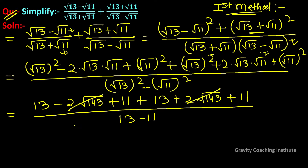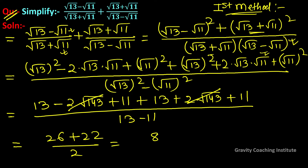Adding the numerators: (13 + 11) + (13 + 11) = 26 + 22 = 48. The 2√143 terms cancel out. So we get 48 upon 2, which equals 24.